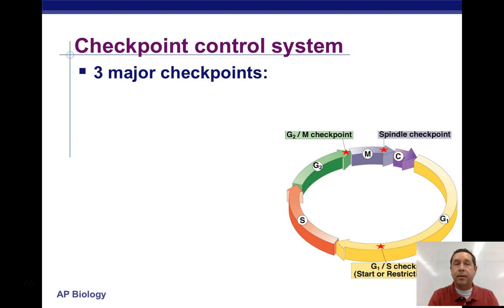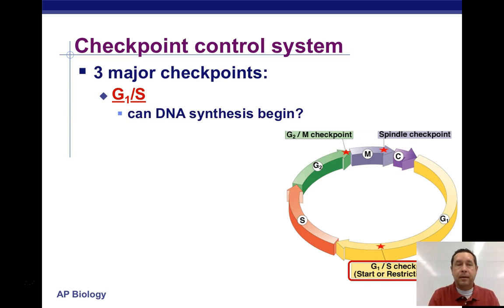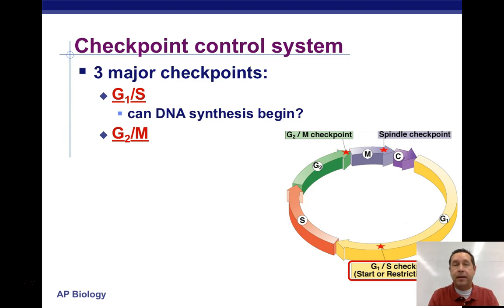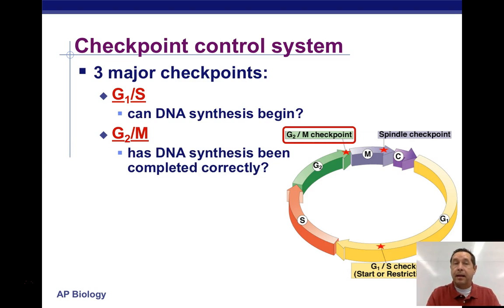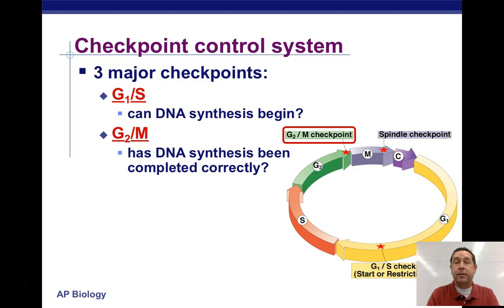In the cell cycle, there are three major checkpoints. There's one between the G1 phase and the S phase, basically making sure that the cell is ready to copy the DNA — to copy the chromosomes. The G2 and M, or mitosis stage, adds another checkpoint. At this point, we want to make sure that the DNA synthesis, the copy of the DNA, has been completed correctly — that we have two complete sets of DNA that can be put into the new cells produced as a result of mitosis.